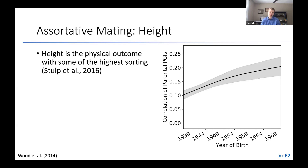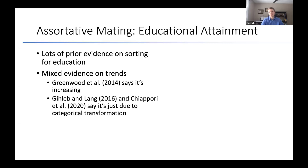Another kind of positive control: it's well-known that people sort on height. When we apply our method to the UK Biobank, the correlation of predicted height between parents is roughly 0.15. It seems to be slightly increasing, meaning parents of children born around 1970 have slightly higher correlated predicted height than parents of children born in 1940. This is consistent with what's been shown previously in both phenotypic and genetic evidence.